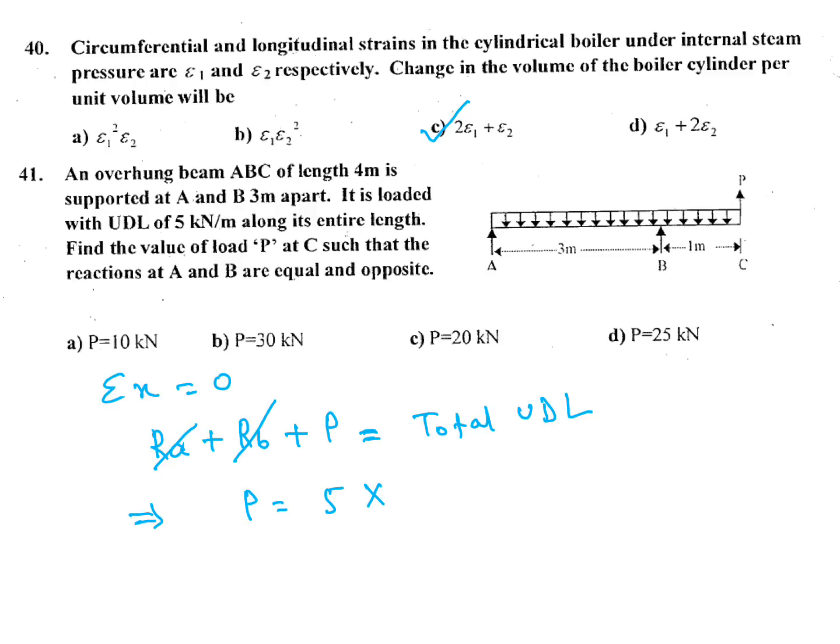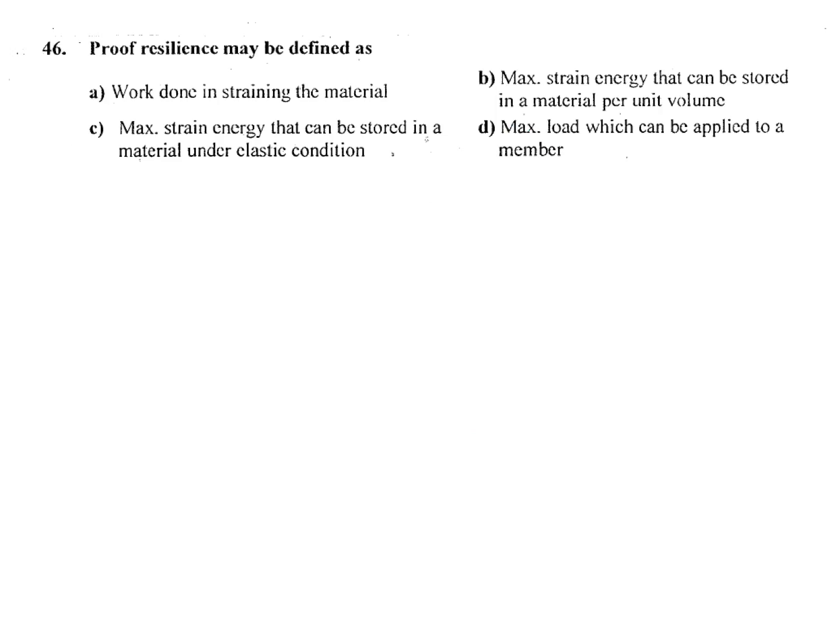Next question: Proof resilience may be defined as: (a) work done in straining the material, (b) maximum strain energy that can be stored in a material per unit volume, (c) maximum strain energy that can be stored in a material under elastic condition, (d) maximum load which can be applied to a member. Option A is not possible, D is not possible. The answer is C: maximum strain energy that can be stored in a material under elastic conditions.